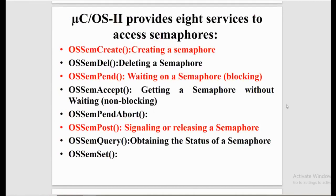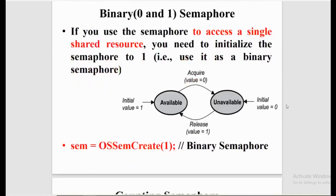MuCOS-2 provides eight services to access semaphores. Out of these eight, we mainly focus on three: OSSemCreate for creating a semaphore, OSSemPend for waiting on a semaphore, and OSSemPost for signaling or releasing a semaphore. There are two types of semaphore: binary semaphore and counting semaphore.